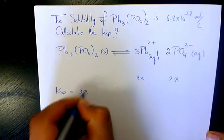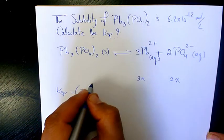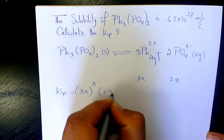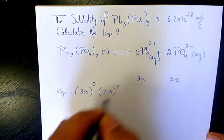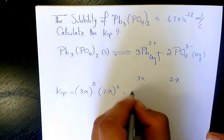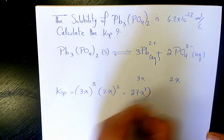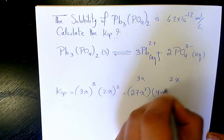(3x)^3 times (2x)^2. That's going to make it 27x^3 and 4x^2,